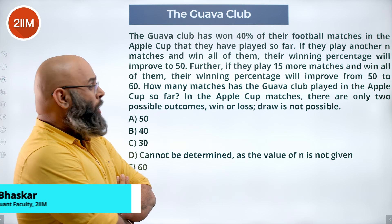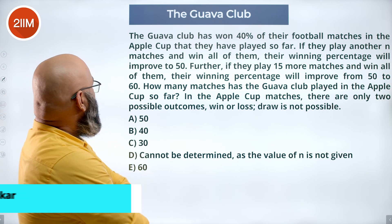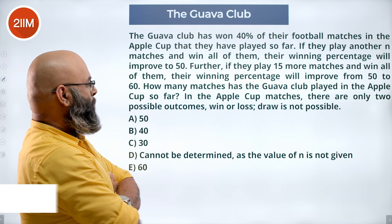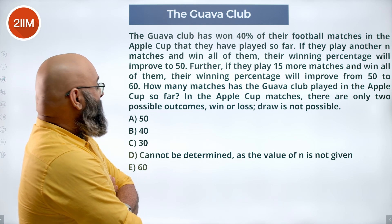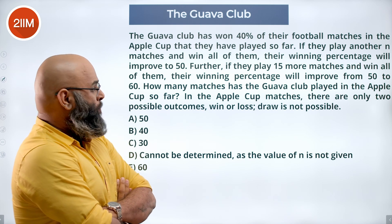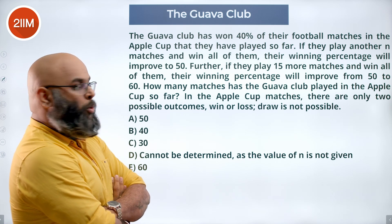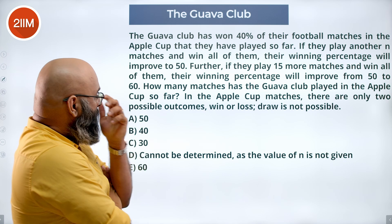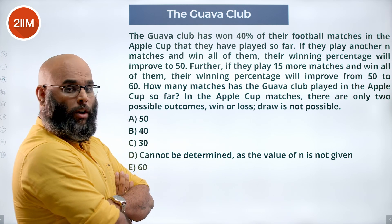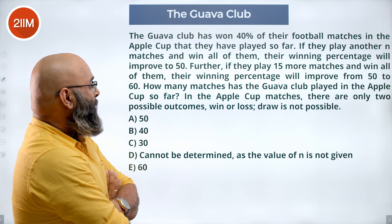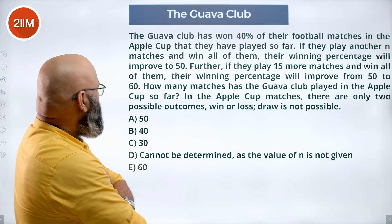The Guava club has won 40 percent of their matches in the apple cup that they have played so far. If they play another n matches and win all of them, their winning percentage will improve to 50. Further, if they play 50 more matches and win all of them, their winning percentage will improve from 50 to 60.